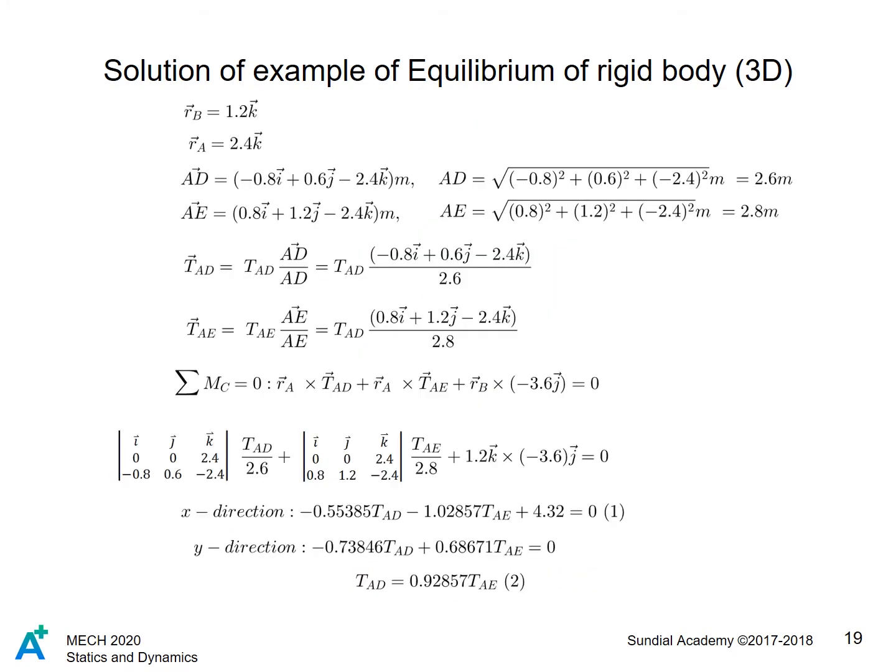We need to first find the vector forms and the lengths of cable AD and AE. After finding the vector form of the tension, we can take the moment equilibrium about C to get two equations from the X and Y components of the moment.